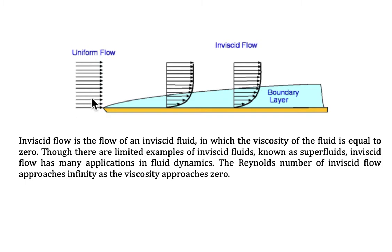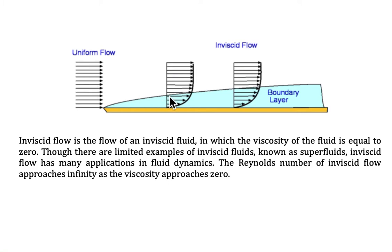Once this uniform flow hits the thin plate here, no-slip condition will occur. No-slip condition means the molecules of fluid will stick very hard on this surface and the velocity of the molecules at this region will become zero. However, because this fluid has its own fluidity, the molecules at this layer and the next layer and so on will increase their speed gradually like this, until at a certain point the velocity will return back to normal, which is the same as the velocity of the uniform flow.